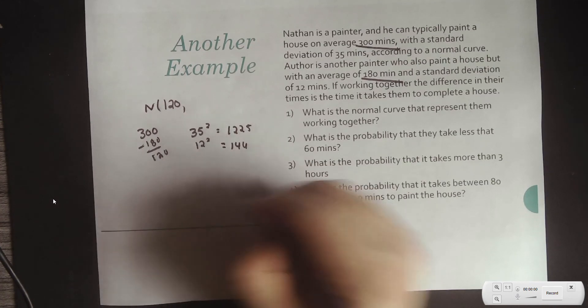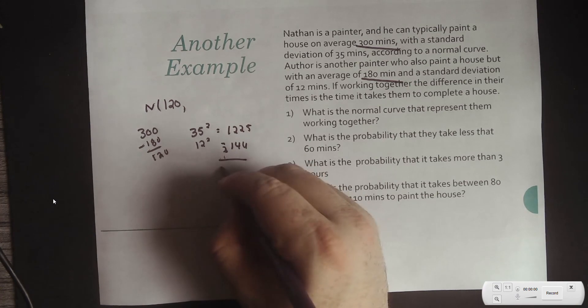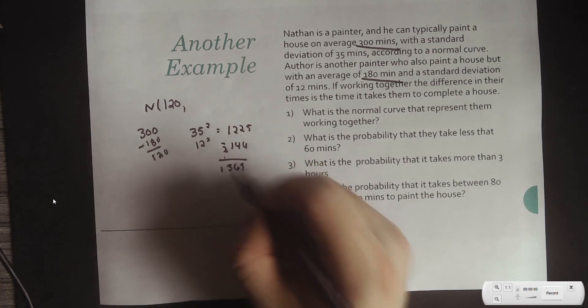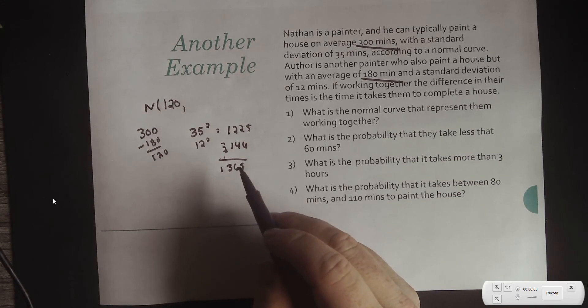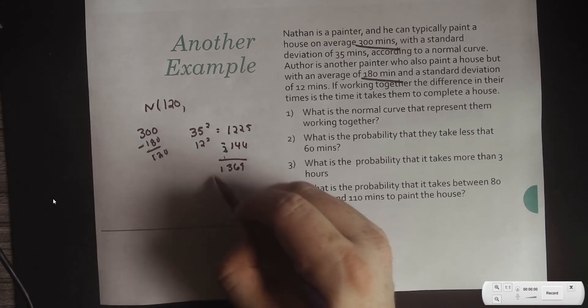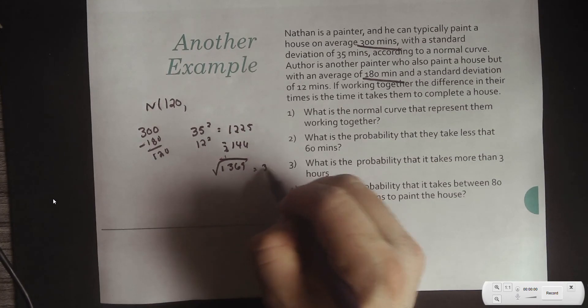So, I want to add those together and I get 1369. And then, to find the standard deviation because remember, this is the variance that gives me, so if I square root it, that gives me 37.